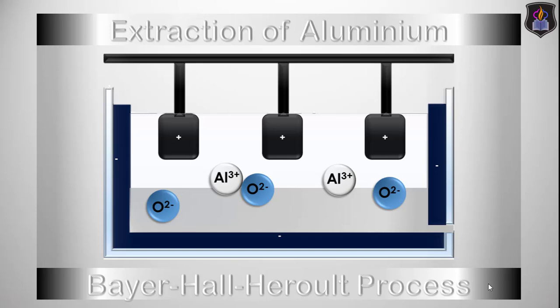Hello and welcome to another edition of the Science Chef Educational Series on Chemistry. In this video, you will learn how Aluminium is extracted from its ore through a combination of the Bayer and Hall-Héroult processes.